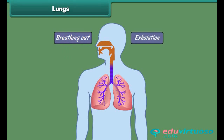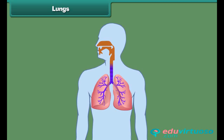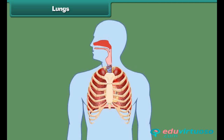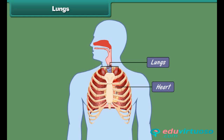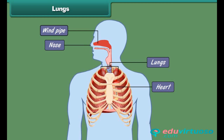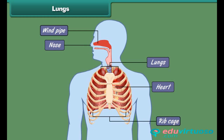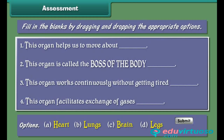All living organisms breathe in and breathe out air. Breathing in is known as inhalation; breathing out is known as exhalation. Once inhaled, air reaches the lungs, where it is exchanged for impure air, which is then exhaled. The human body has two lungs, located on either side of the heart in the chest cavity. The nose and windpipe form the passage for air to move in and out of the lungs. Like the heart, the ribcage also protects the lungs.